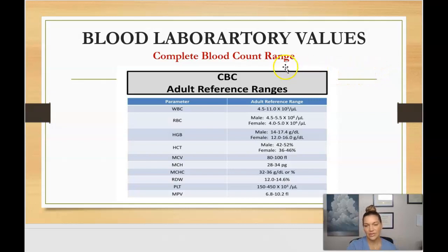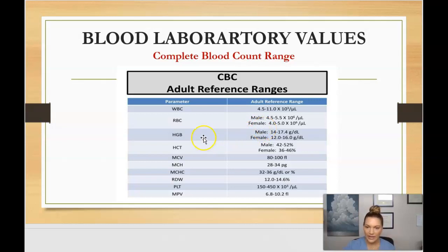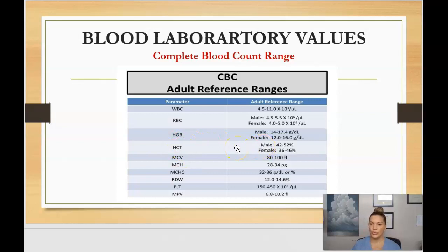Here you can see the CBC adult reference ranges for the complete blood count. White blood cell count, or WBC, should be between 4.5 and 11 — if it's over 11, that's usually indicative of some type of infection in the body. Red blood cells, or RBCs, should generally be between 4.5 and 5.5. Hemoglobin: for a male it's between 14 and 17.4, for a female 12 and 16. Hematocrit: male 42 to 52, female 36 to 46.